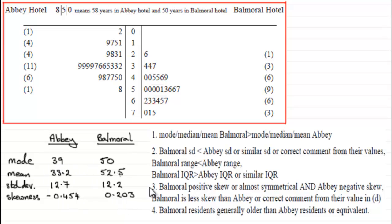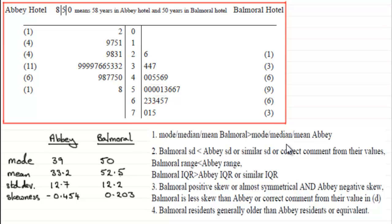These are the answers that are given in the mark scheme, and you'd get a mark as long as you made one comment from each of these — four comments. Only one of the comments, though, gets you a mark, up to a maximum of three marks.